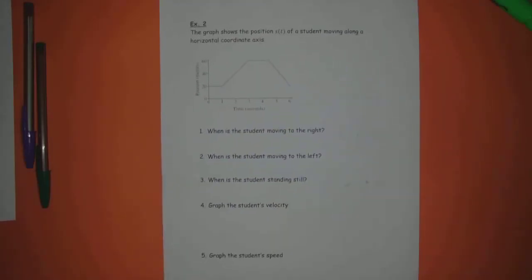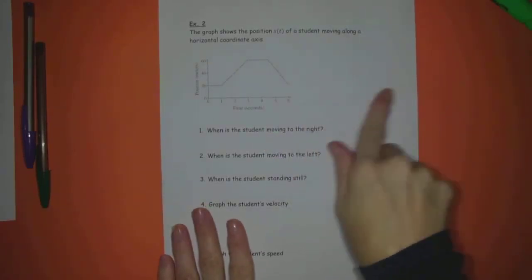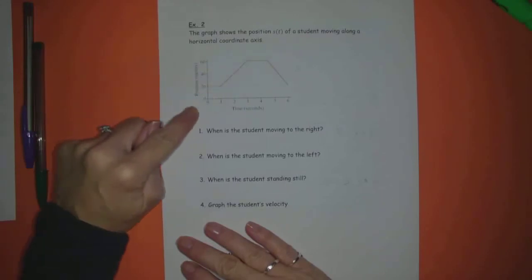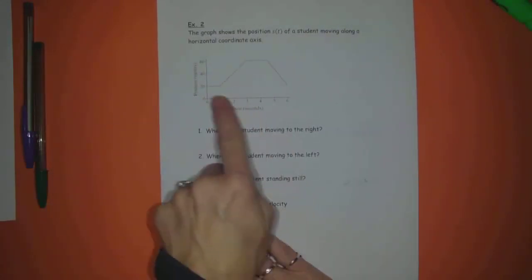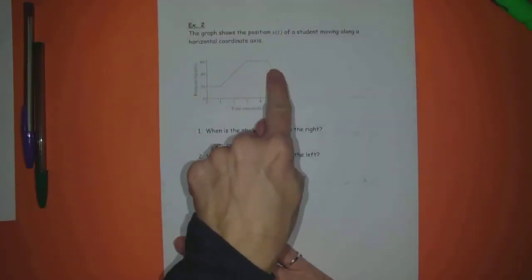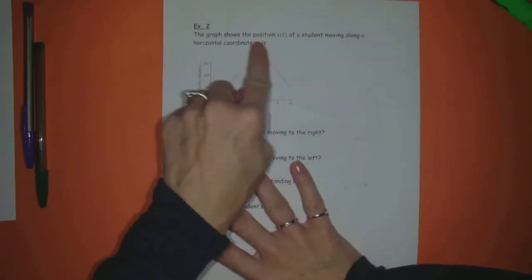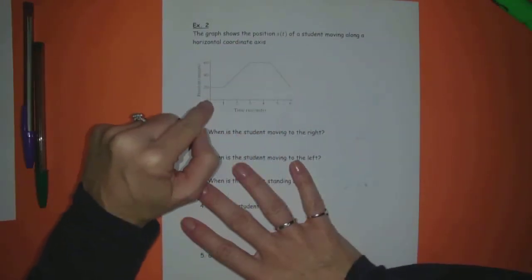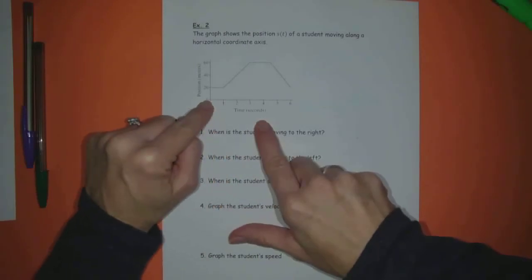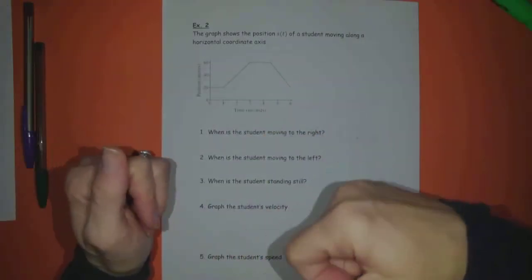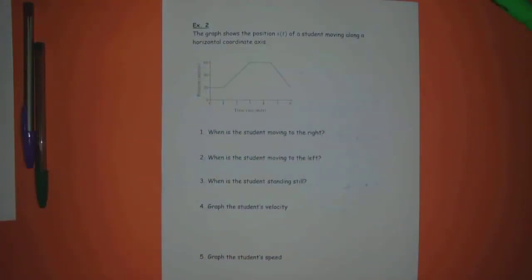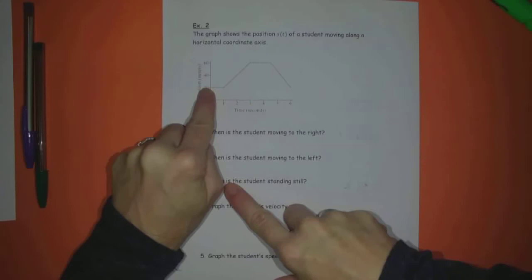Example 2 says, the graph shows the position S(t) of a student moving along a horizontal coordinate axis. Same idea. Right, left, right, left. These are the positions in meters over time. So every one of these y values just represents a meter reading. So again, if you kind of want to think about it, when time was 0, this student is 20 meters out, out away from, let's say, like the middle of the line or the origin. They're 20 meters out.